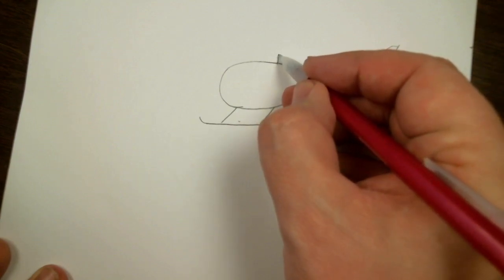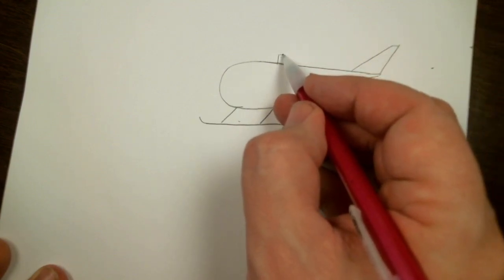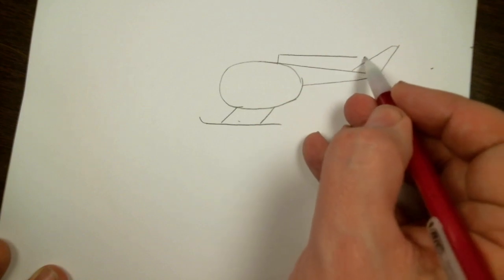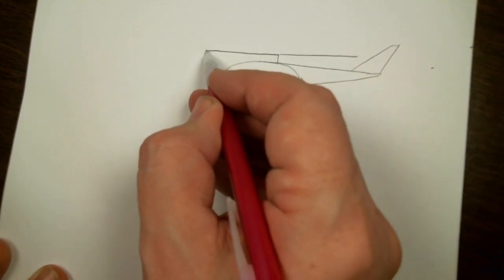Then right here on the top we're going to draw a straight line and a straight line. Make sure we don't hit the tail. And a straight line the same length.